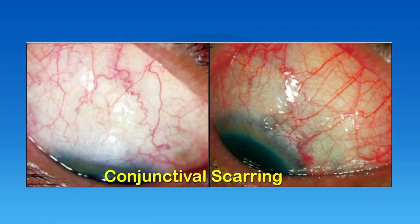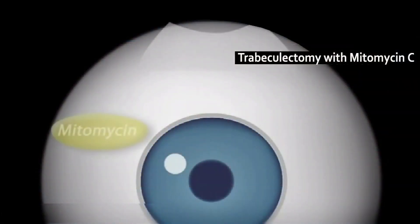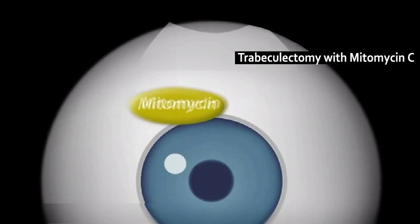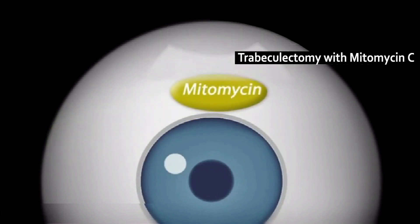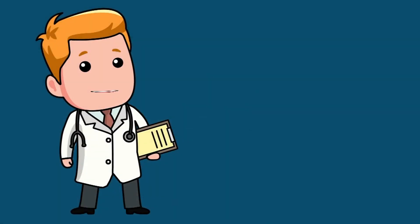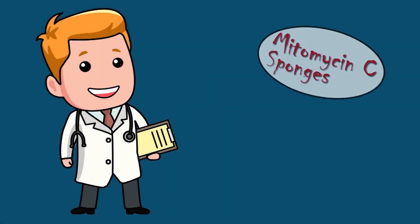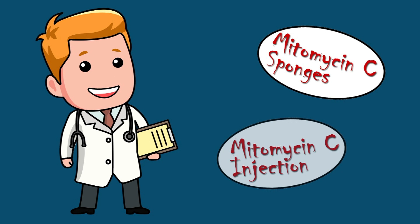Conjunctival scarring is one of the difficulties associated with glaucoma surgeries such as trabeculectomies. However, an effective way to control scarring is the application of mitomycin C. Here is the video eliciting two possible ways to apply mitomycin C during a trabeculectomy.